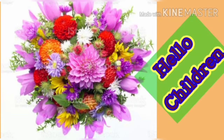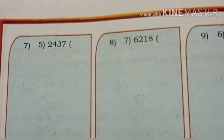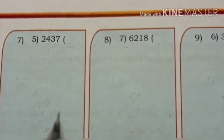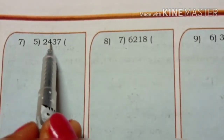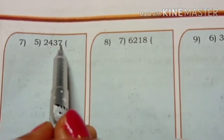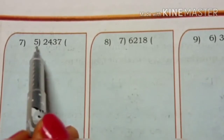Hello children, let us continue Chapter 6, Division, Exercise 6.3. Now, 7th question: 2437 divided by 5.